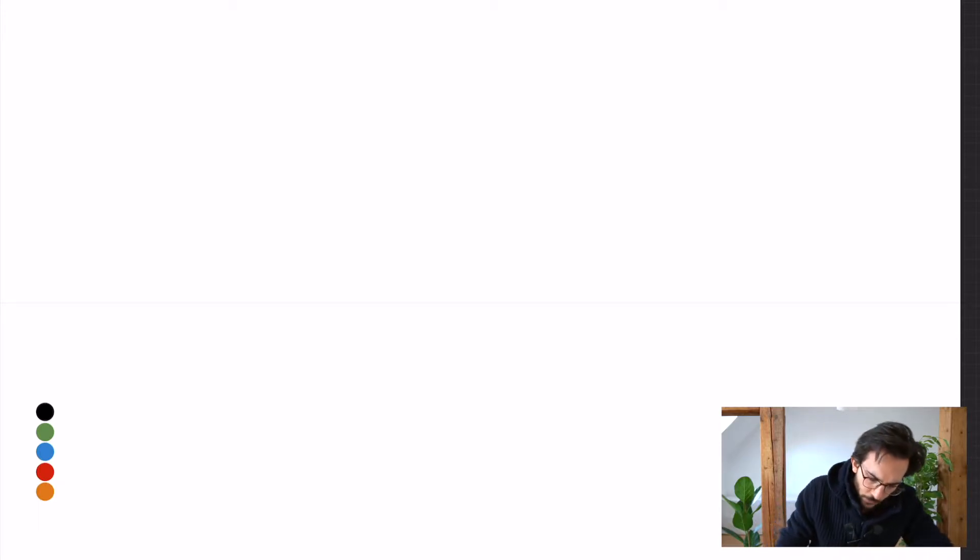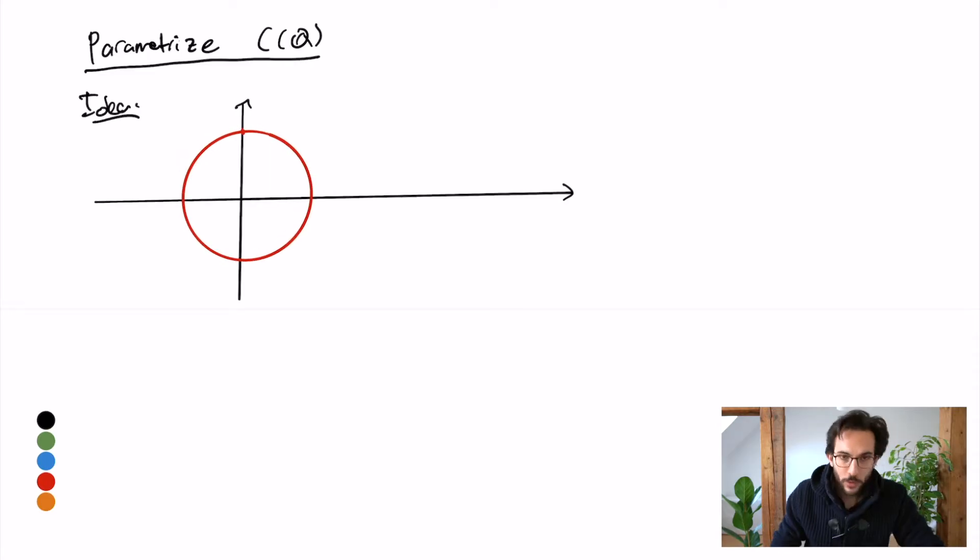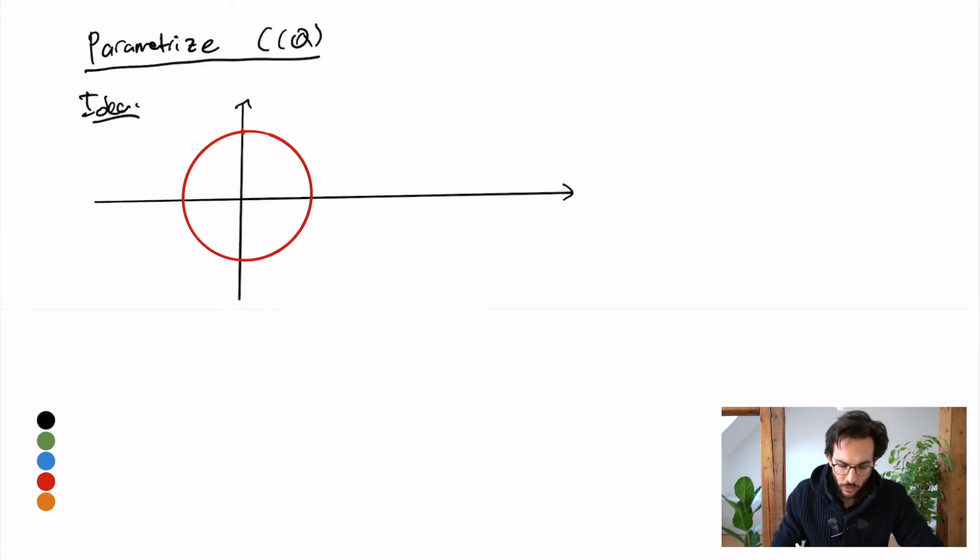Okay, so let's talk about the idea on how to parametrize rational points. The idea will come from geometry. So let's draw our circle once again. What I'm going to do is to distinguish the north pole, (0, 1), of my circle. It's kind of a natural choice.